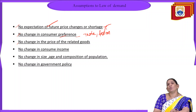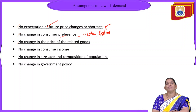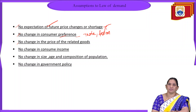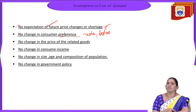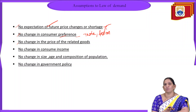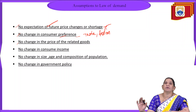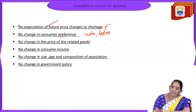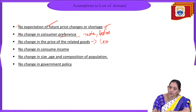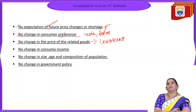Next is no changes in the prices of related goods. Related goods include substitutes and complementaries. Substitutes are goods which can replace one another — for example, tea and coffee are substitutes; both satisfy as a morning hot drink. If the price of tea changes, automatically the demand for coffee will change. That's why the prices and demand of related goods should also be constant when applying the law of demand.